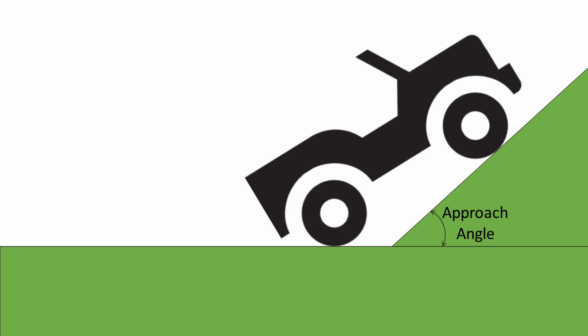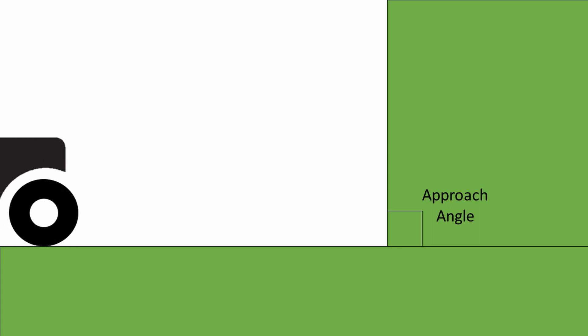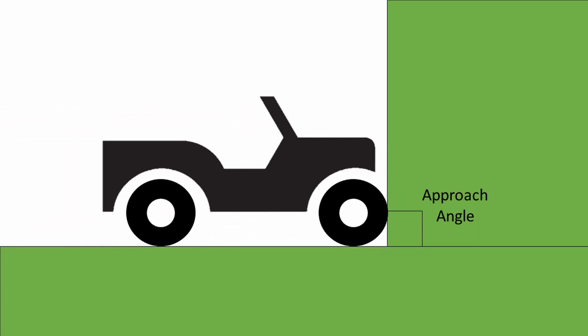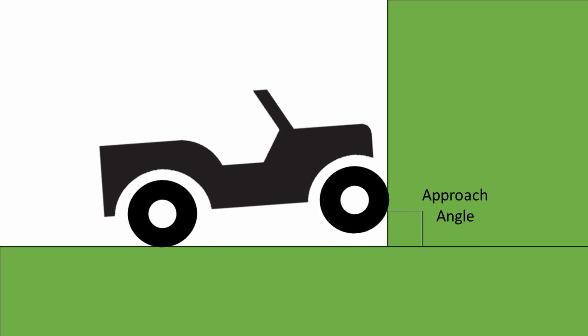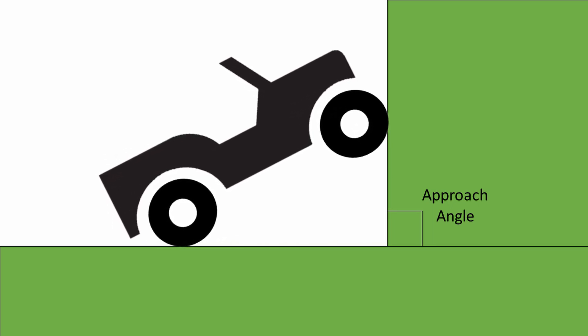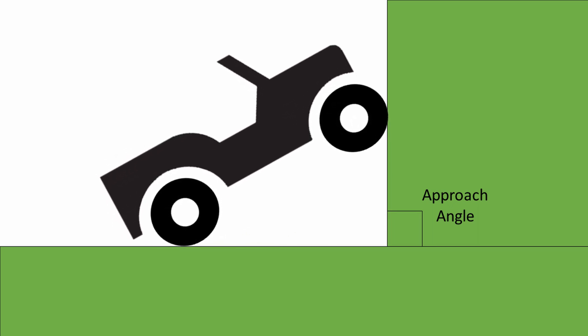Some vehicles are designed to have an approach angle which is effectively vertical, so the front face of the tyre sticks out in front of the furthest forward fixed part of the vehicle. That vehicle could effectively start on a wall, although of course it couldn't climb it because it couldn't get enough traction. So the approach angle tells us how steep a slope we are able to start on.